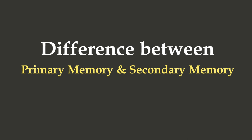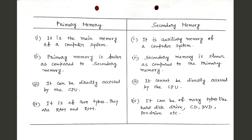Differences between primary and secondary memory: (1) Primary memory is the main memory of a computer system, while secondary memory is the auxiliary memory. (2) Primary memory is faster than secondary memory. (3) Primary memory can directly be accessed by the CPU, while secondary memory cannot. (4) Primary memory is of two types — RAM and ROM — whereas secondary memory can be of many types like hard disk drive, CD, DVD, pen drive, etc.